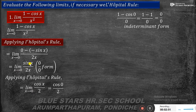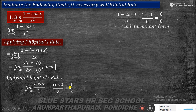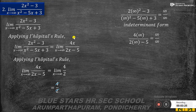Applying L'Hôpital's rule again: we differentiate sin x to get cos x, and differentiate 2 into x (that is 2x) to get 2. So we have limit x tends to 0 of cos x by 2. Substituting x equal to 0: cos 0 is 1, so the answer is 1 by 2. Therefore, limit x tends to 0 of (1 minus cos x) by x squared equals 1/2.